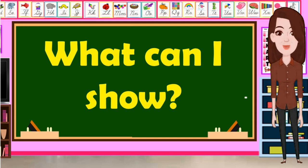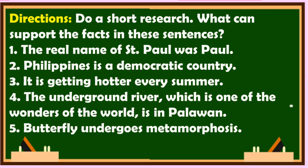Now, under the activity 'What Can I Show' in your English module. Directions: Do a short research. What can support the facts in these sentences? Number one: The real name of St. Paul was Paul. Number two: Philippines is a democratic country. Number three: It is getting hotter every summer. Number four: The underground river, which is one of the wonders of the world, is in Palawan. Number five: Butterfly undergoes metamorphosis.